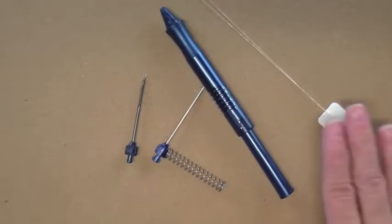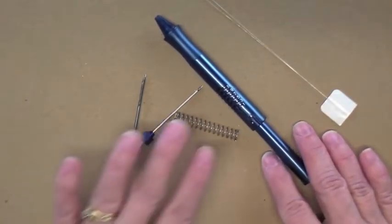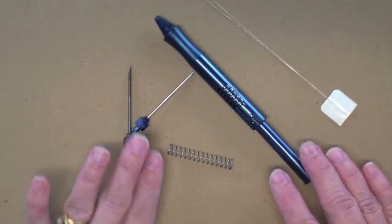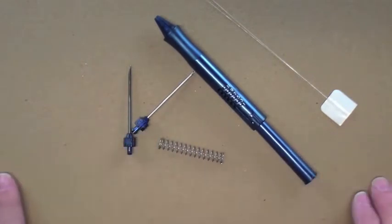When you get your Ultra Punch Needle it will come with a couple of threaders, the punch needle tool, extra needles, and an extra spring.